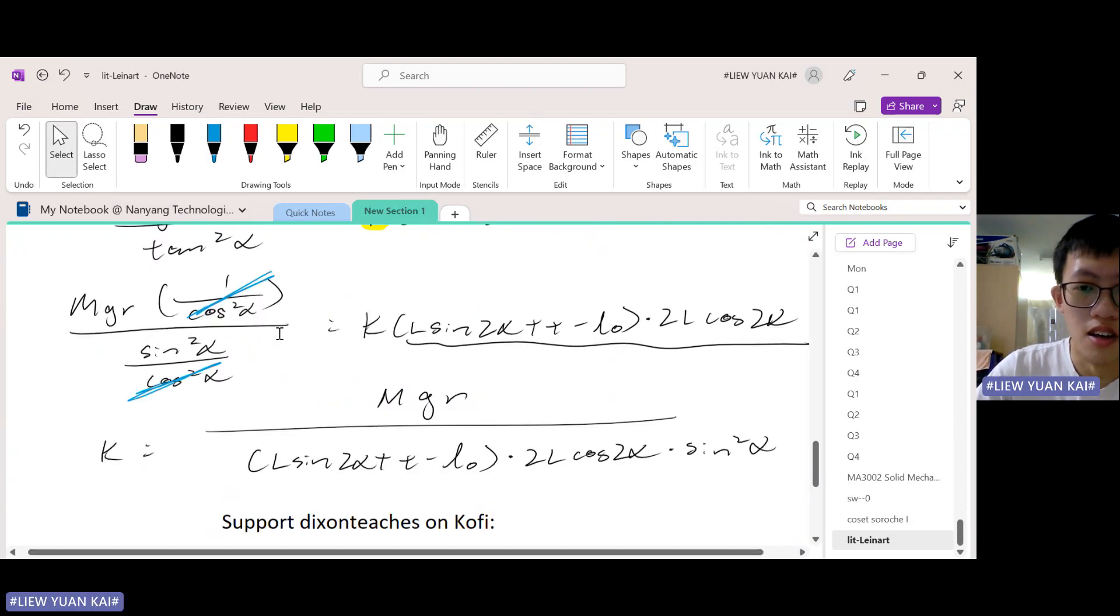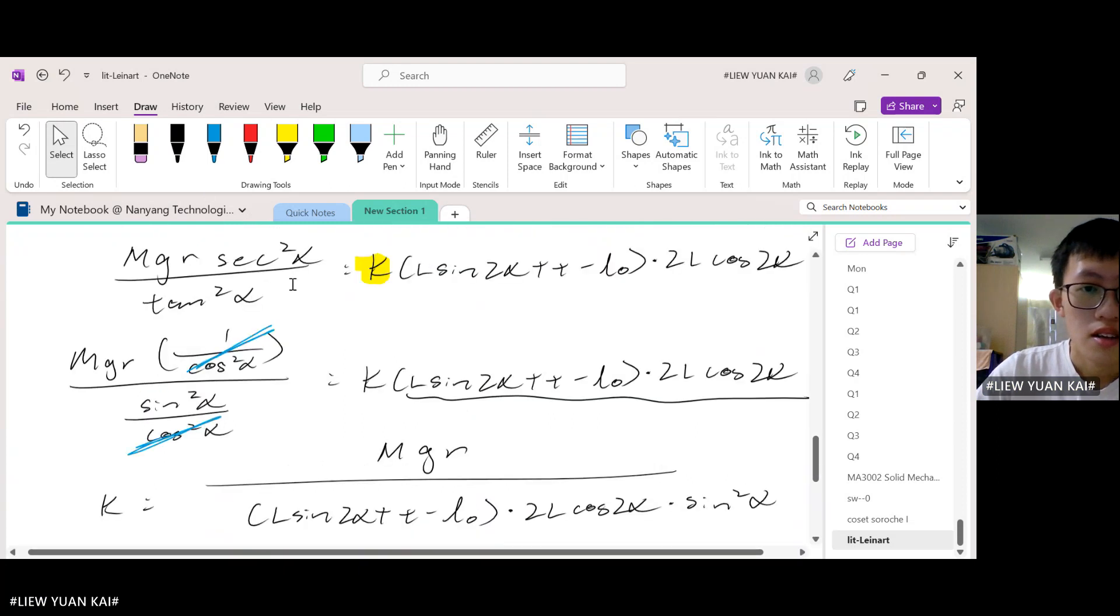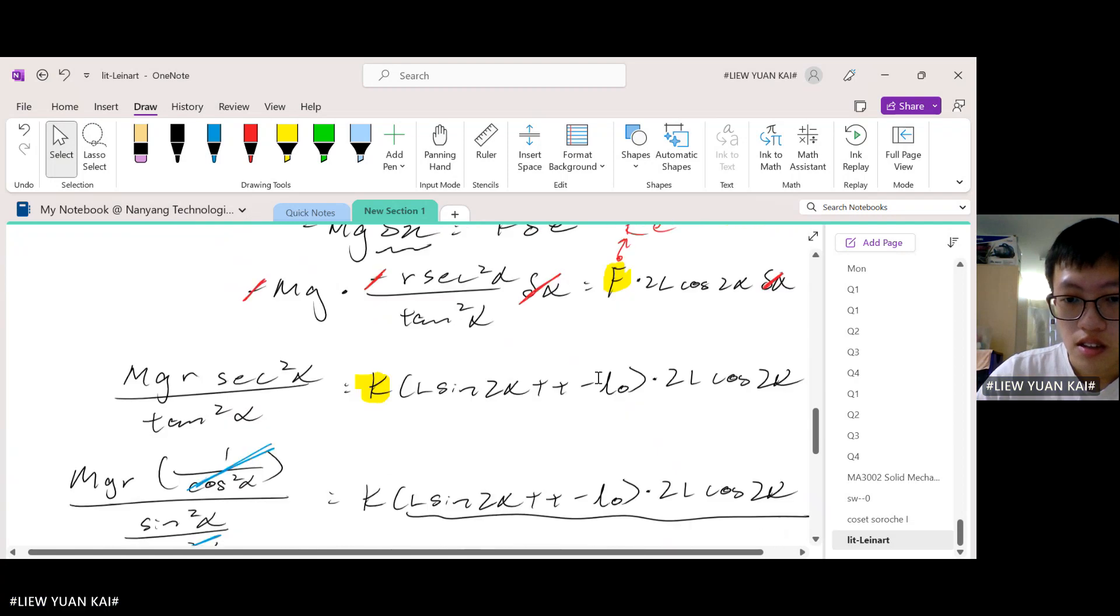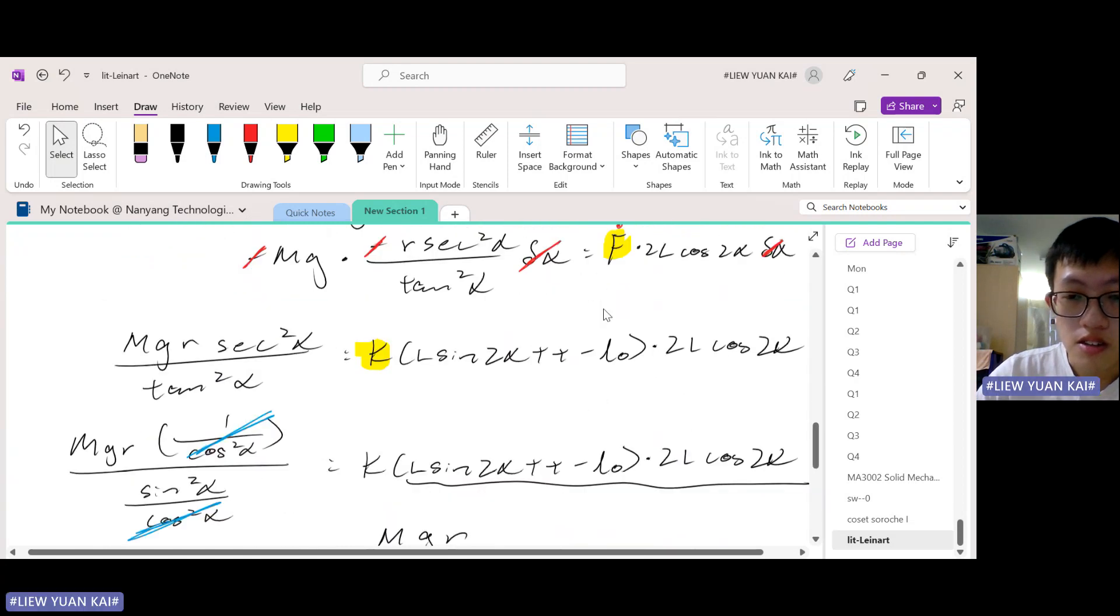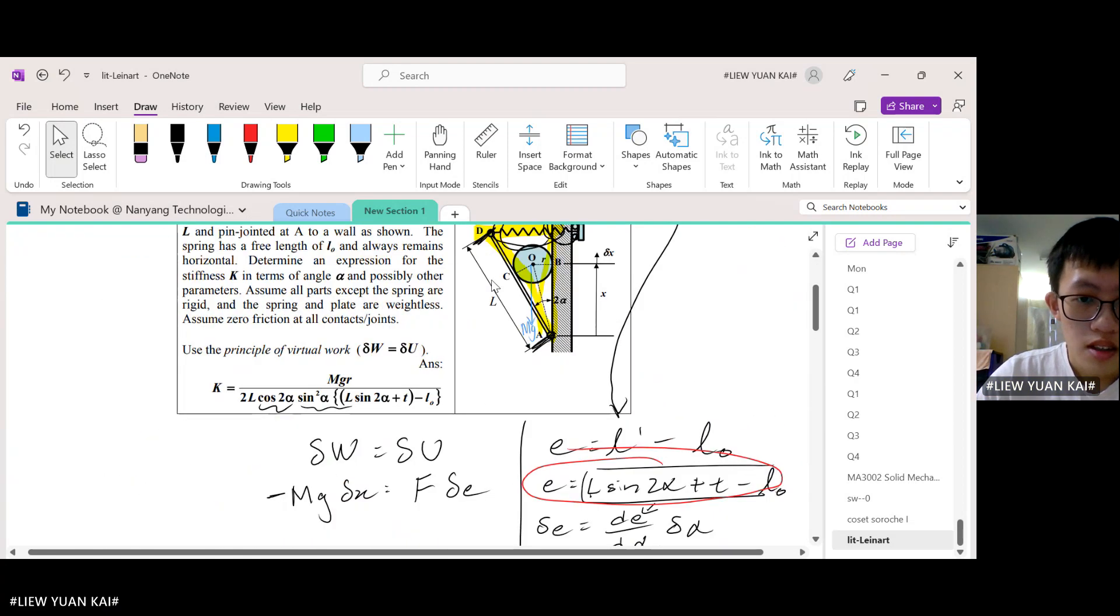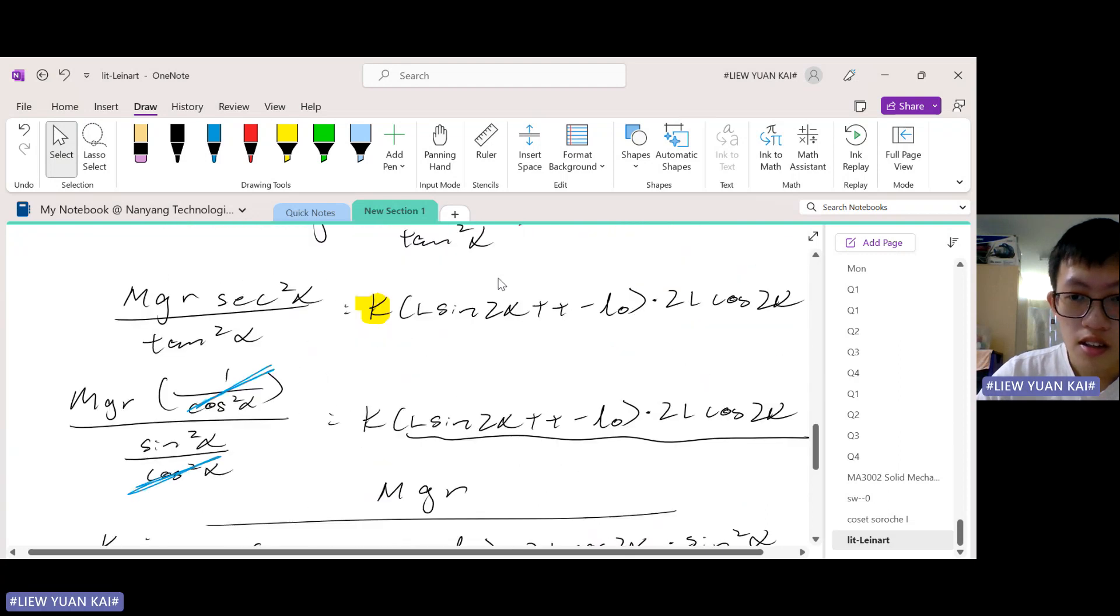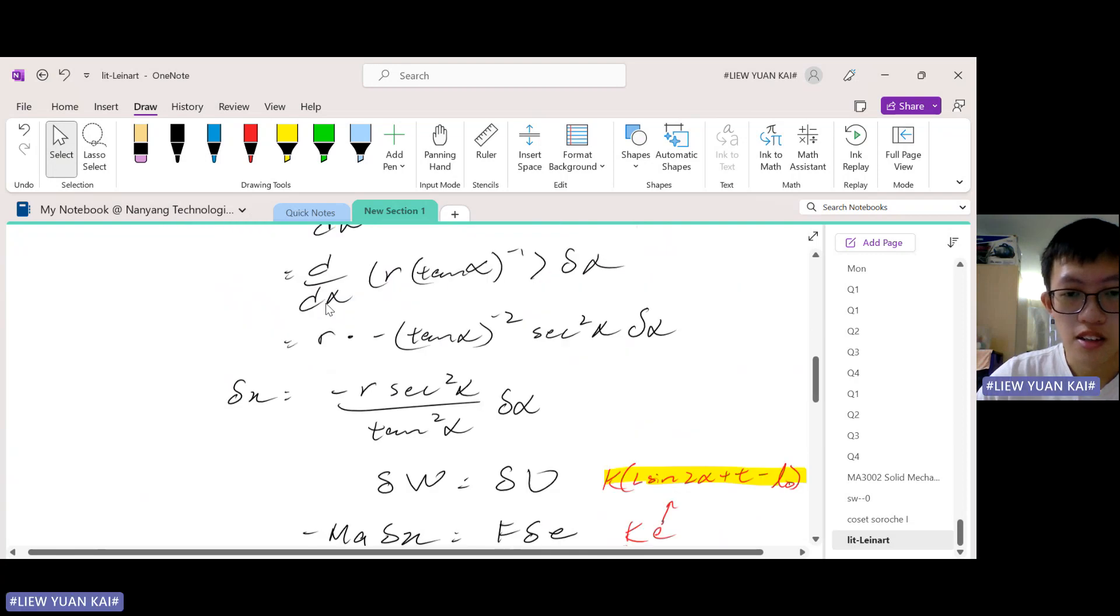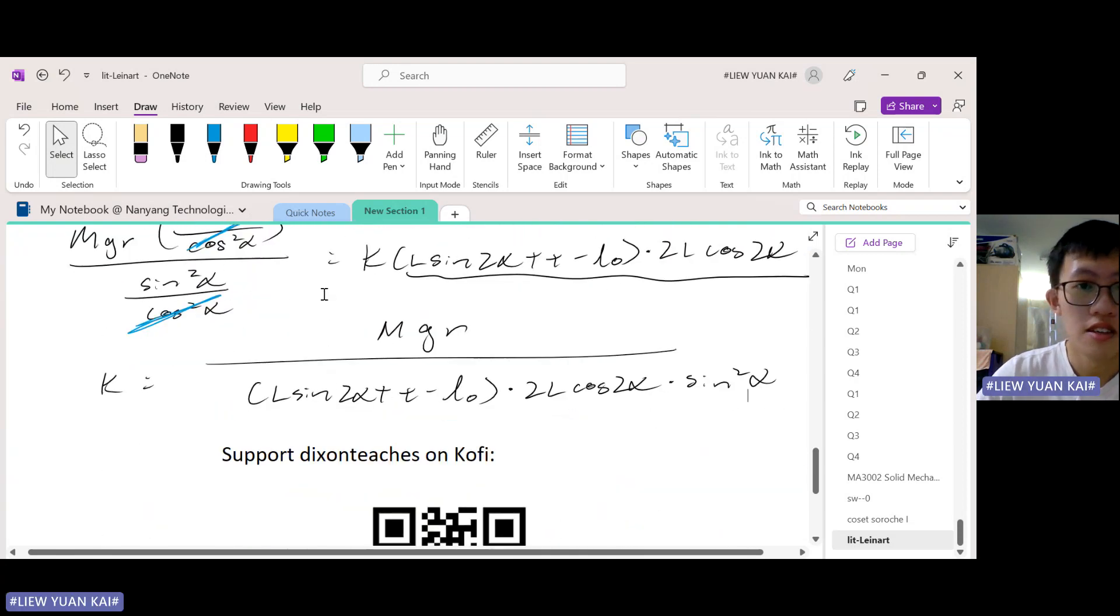2L cos 2α, 2L cos 2α sine squared α. Sine squared α and then the extension. All right, so this is correct. So this is the solution.